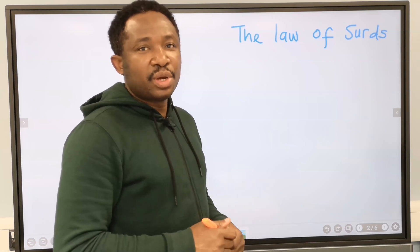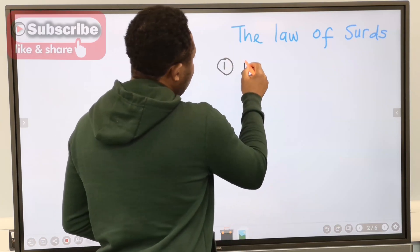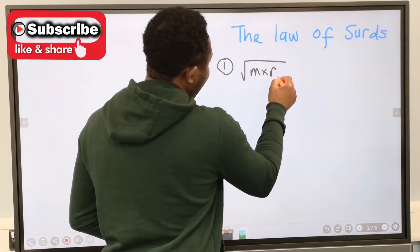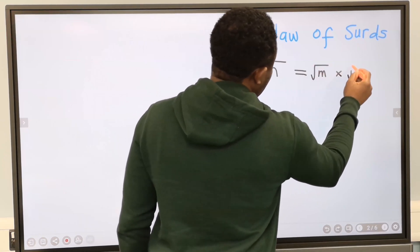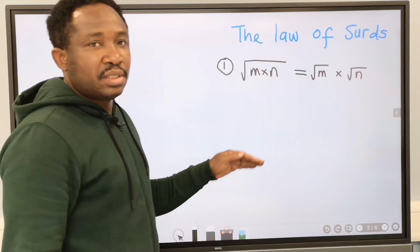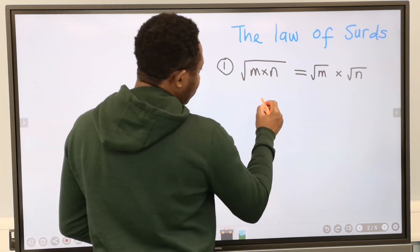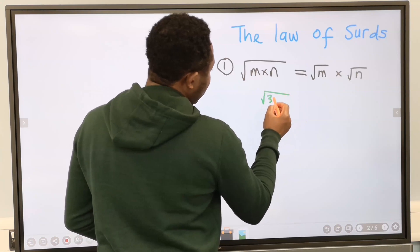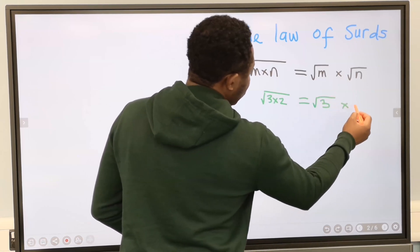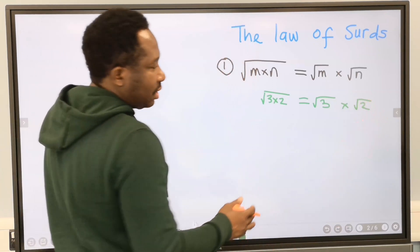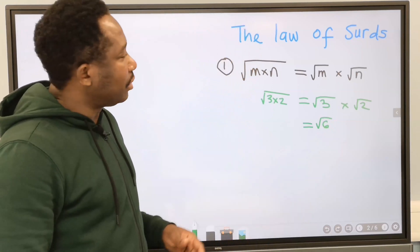Let's consider some basic laws governing surds. Number one: the square root of m multiplied by n. We can split this into the square root of m multiplied by the square root of n. This is true for any given positive integer. For example, the square root of 3 times 2 can be expressed as the square root of 3 multiplied by the square root of 2, which equals the square root of 6. This is allowed in surds.